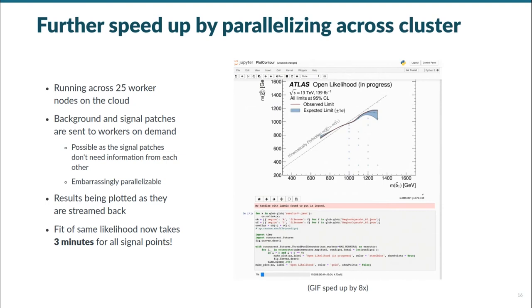The speedups we observed with PyHF on a single machine can be further improved by parallelizing the fits of all the signal hypotheses. Here we see a GIF on the right of the Jupyter notebook that is sending out fits of the models for all the signal hypotheses to run on 25 worker nodes in the cloud, and then updating the exclusion contour plot in real time as those fit results come back in. As the different fits are independent of each other, the patch back, background, and signal models can be sent out to worker nodes on demand, taking advantage of the scaling to make quick work of this embarrassingly parallelizable problem. Through this weak parallelism, the same contour plot we just saw can be fully reproduced in just three minutes. This clearly motivates the idea of fitting as a service on clusters in the future.